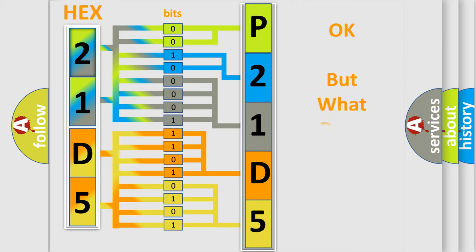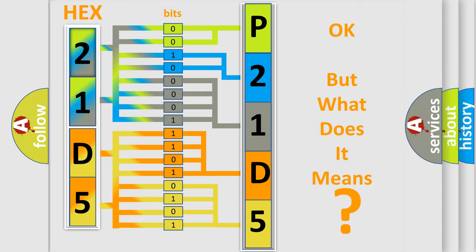We now know in what way the diagnostic tool translates the received information into a more comprehensible format. The number itself does not make sense to us if we cannot assign information about what it actually expresses. So, what does the diagnostic trouble code P21D5 interpret specifically for Lincoln car manufacturers?